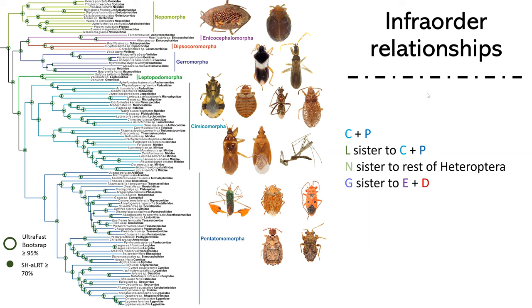A lot of these relationships are very similar to previous analyses. We have Cimicomorpha and Pentatomomorpha, of course, still sister to each other, with Leptopodomorpha sister to the combined Cimicomorphins and Pentatomomorphins.